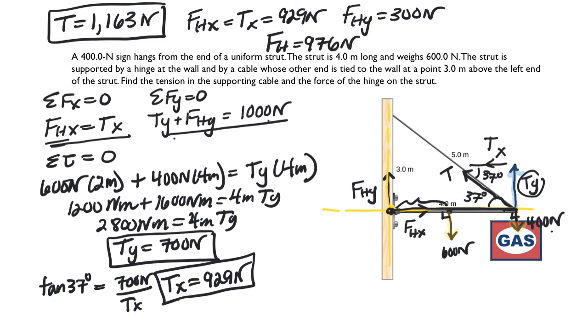Now the last thing that's somewhat interesting is we can get the angle of the hinge force if we wanted to by using the tangent. Get the angle of the two. So if I have my FHX and my FHY, I can get my total F and I can get my theta. Just to show you that it's like some random angle. That's going to be the inverse tan of FHY, which is 300 newtons, divided by FHX, which is 929. And I get about 18 degrees.